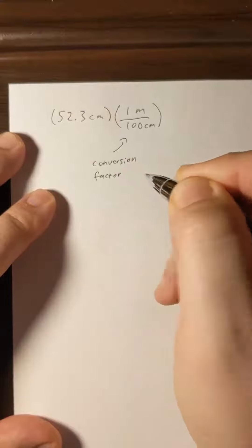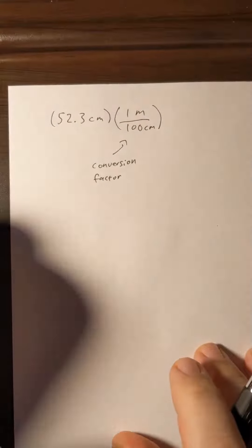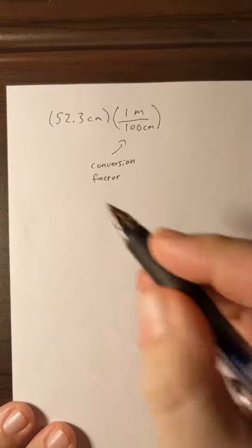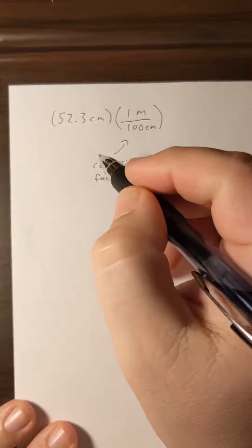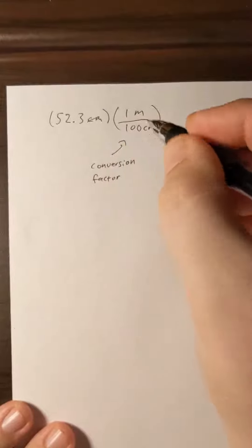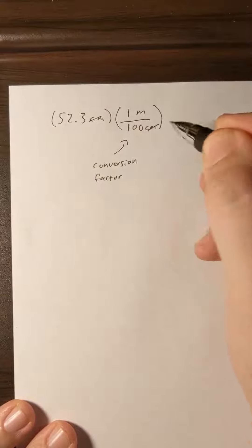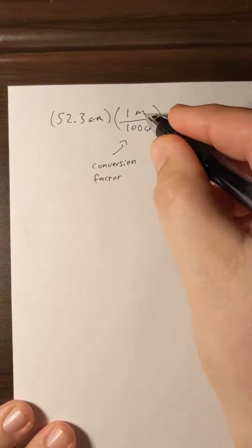All this does is change the units. It won't affect our significant figures at all. Now notice that the units we want to get rid of are on opposite sides of the fraction. We have centimeters on the numerator and centimeters in the denominator, so they'll divide out, and this will leave us with just a unit of meters.